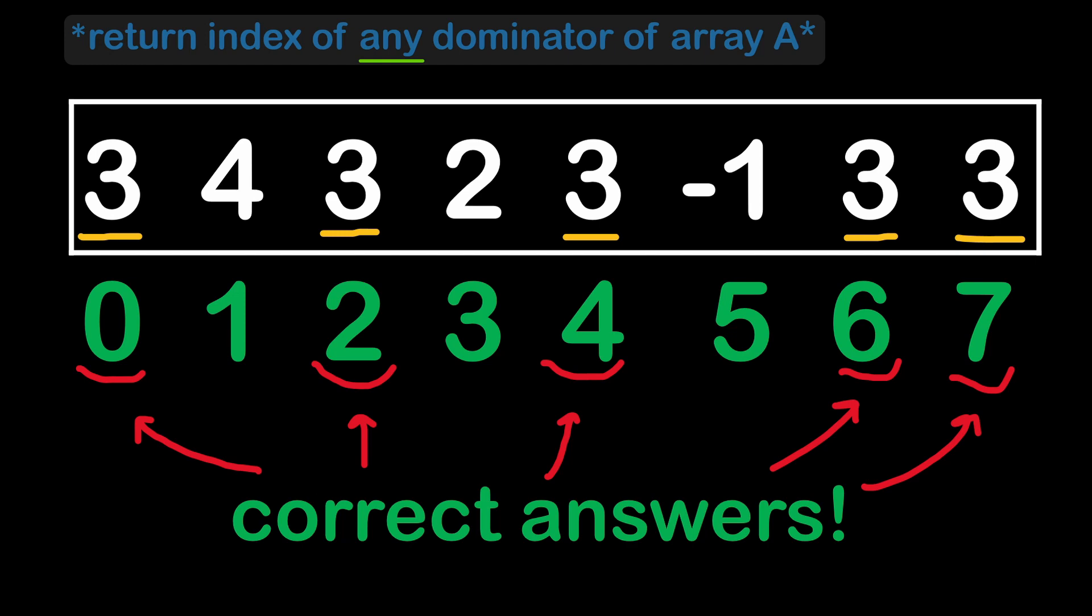We can start thinking of a brute force approach where we consider the first element of the array, then we loop over all the other elements and count the number of occurrences of this particular element. Then we move on to the second element and test all the other elements, checking all the occurrences until we have counted all the occurrences of all the elements of this array.